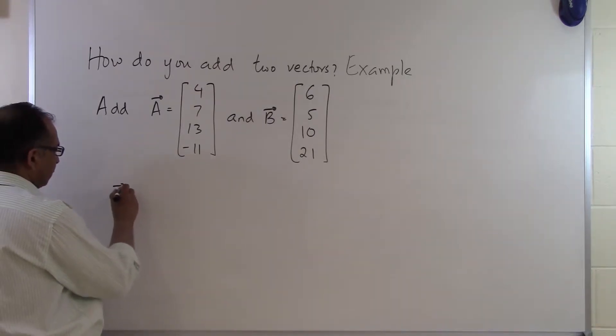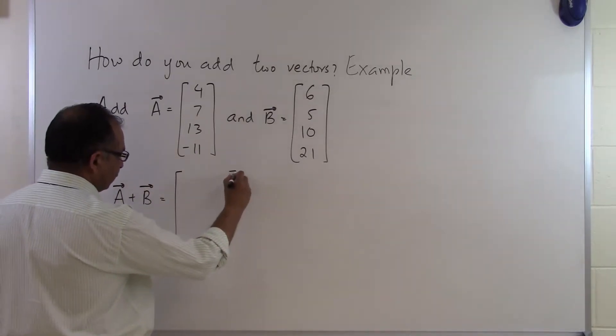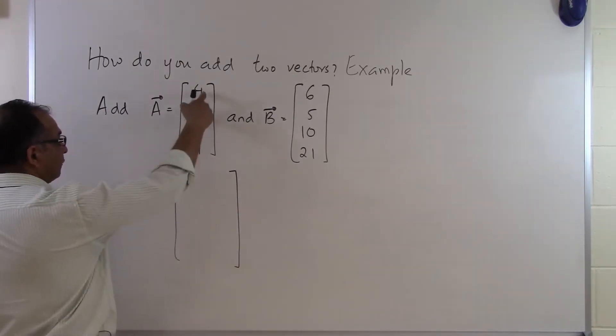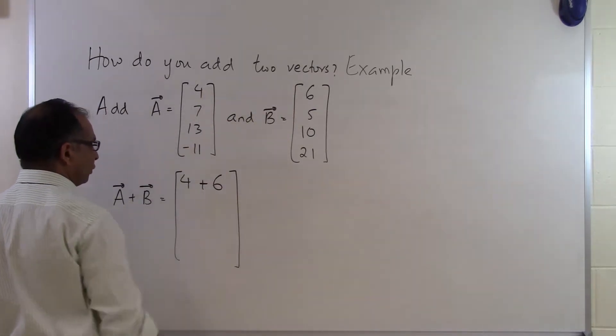In order to add these two vectors we'll have to do component by component addition, which means that I've got to take the first component here which is 4 and the first component here and add those two.